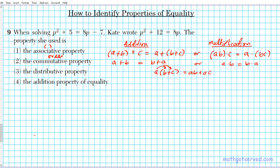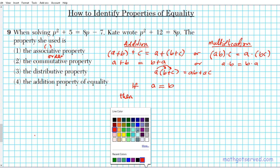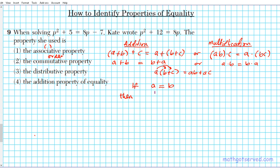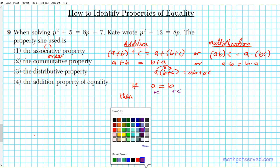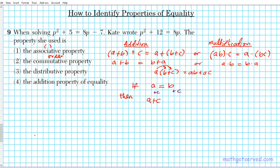Last one: addition property of equality. If you have an equation statement, let's say a is equal to b, then what you can do is if you add the same number value to both sides, let's say you add c to both sides, guess what? The equality is preserved. So then a plus c is equal to b plus c.